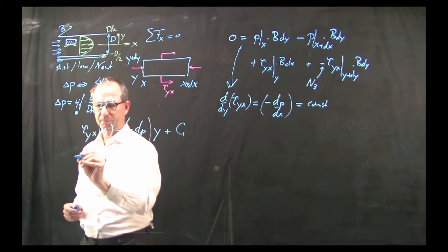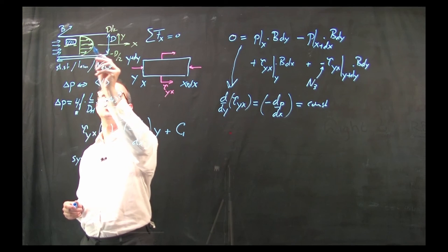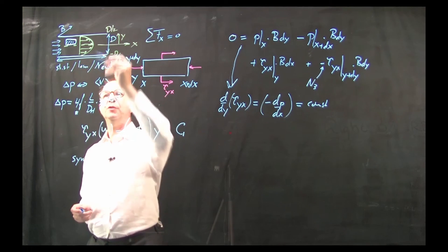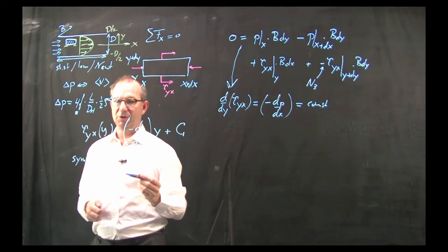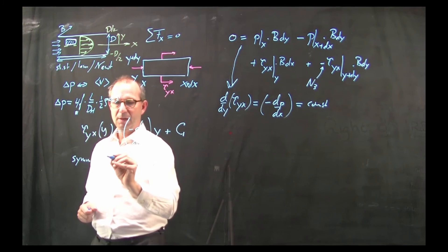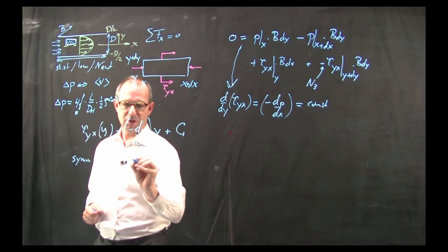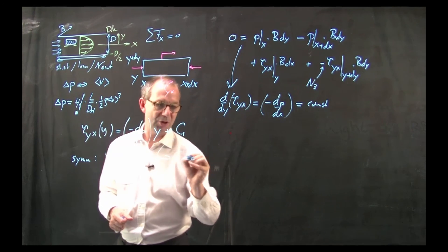Due to symmetry, there cannot be a force on the y equals 0 line. Or rephrased, there cannot be momentum exchange at y equals 0 due to the symmetry. And thus tau yx at 0 is 0, giving me that this c1 equals 0.